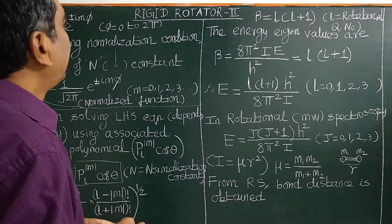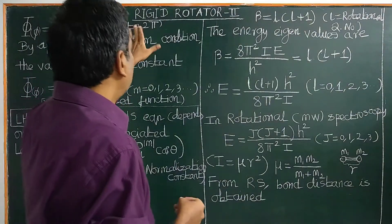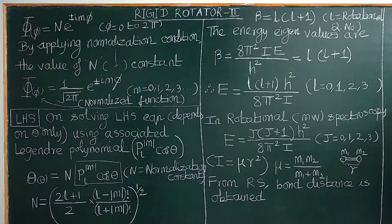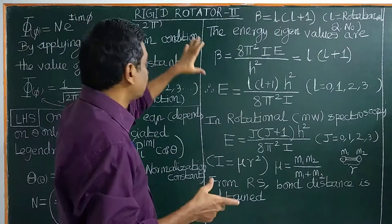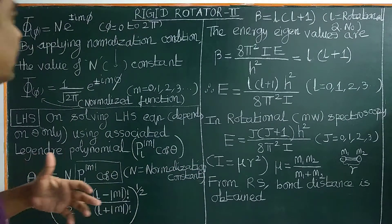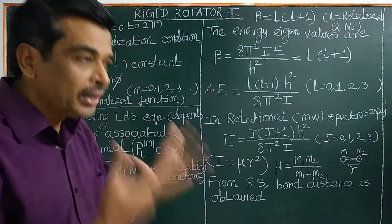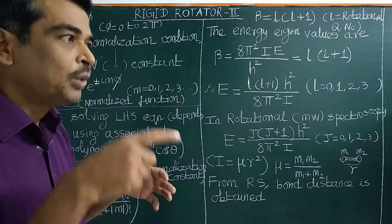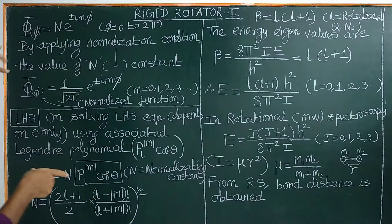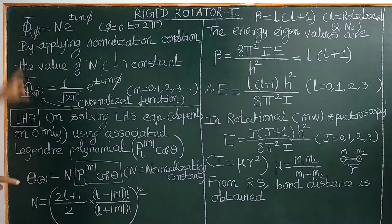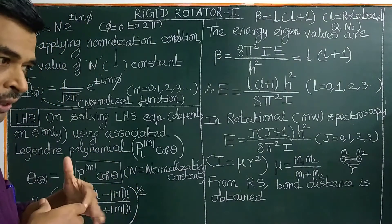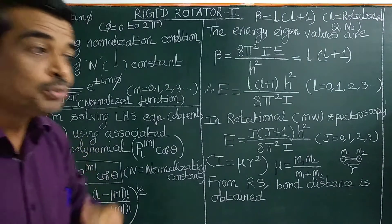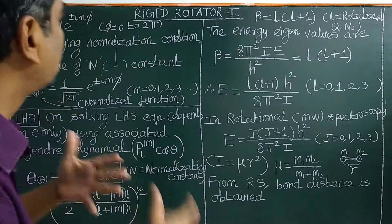Good morning. Today we will study about rigid rotator part 2. In part 1, we derived the Schrödinger wave equation for rigid rotator by applying the basic tricks of quantum mechanics. That is H-cap psi equal to E psi. Psi is a product of the theta function and phi function, also called spherical harmonics.